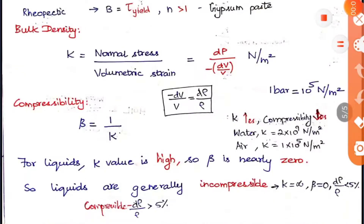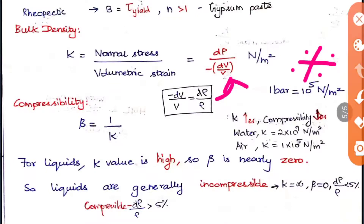The next property is the bulk modulus (K), which equals normal stress divided by volumetric strain: K = dP / (-dV/V). The unit is Newton per meter square (Pascals). Note: 1 bar = 10^5 N/m². The term dV/V can also be written as d_rho/rho. Compressibility (beta) is the inverse of bulk modulus: beta = 1/K. When K increases, compressibility decreases.